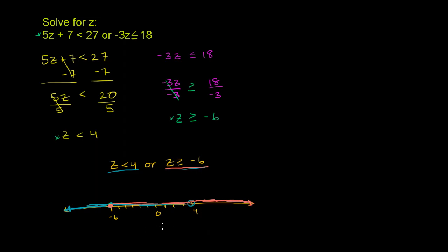Every number will meet either one of these constraints or both of them. Numbers in the middle meet both constraints. Numbers far to the right meet the second constraint, and numbers far to the left meet the first. For example, 0 works: 5 times 0 plus 7 is 7, which is less than 27, and negative 3 times 0 is 0 which is less than 18 — it meets both. If we try 4: negative 3 times 4 is negative 12, which is less than 18, so it meets the second constraint. And 5 times 4 plus 7 is 27, which is not less than 27 — but since this is an 'or', satisfying one constraint is enough. So the entire number line satisfies either one or both of these constraints.